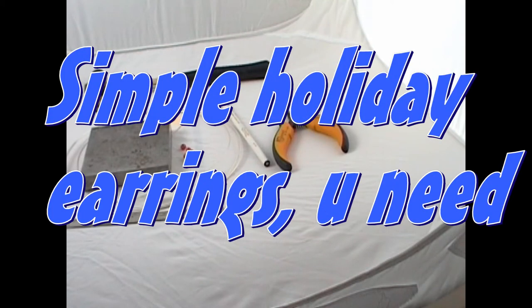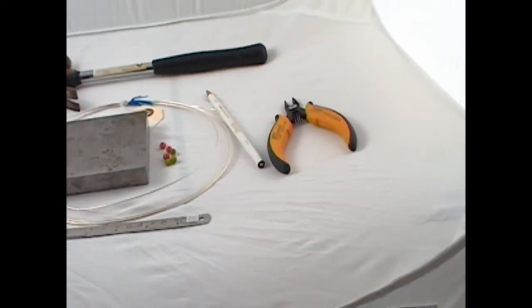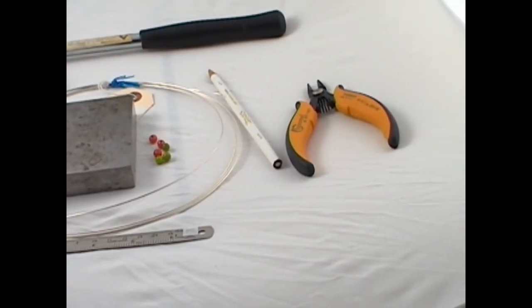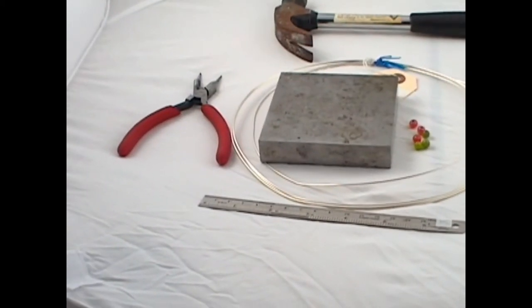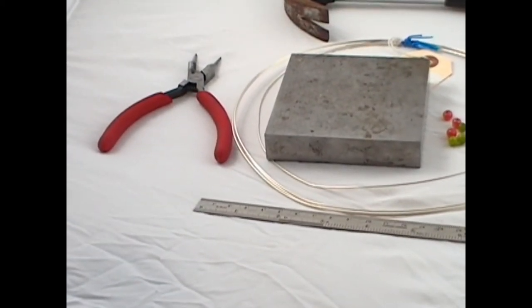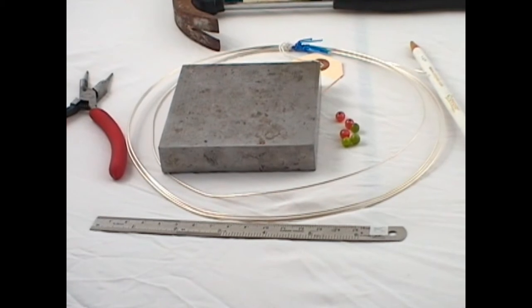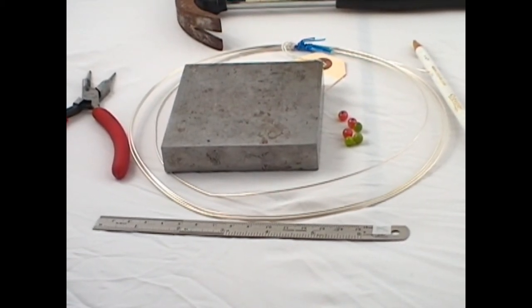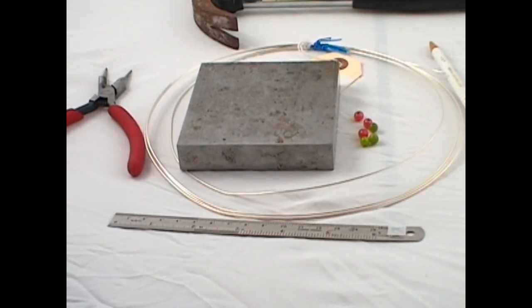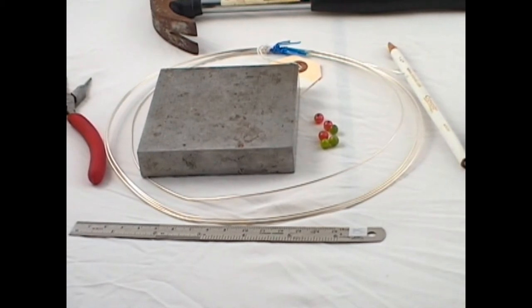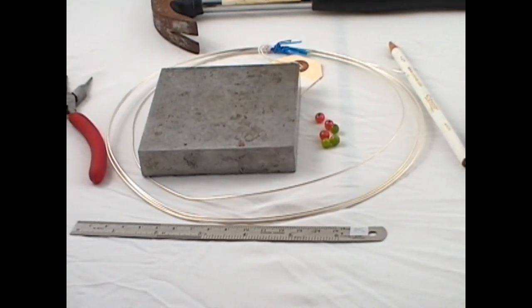The wire cutters are the yellow ones, then we have the needle nose pliers, those are the red ones. Then in the bottom we have a steel rule which is about six inches long. In the middle is a steel block. We would only use the steel block for one move in the whole thing. We also have the beads: three green and three red beads. And around the block is the 18 gauge silver, in this case fine silver.